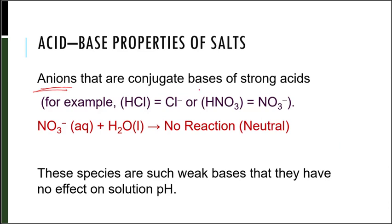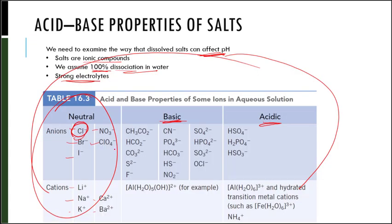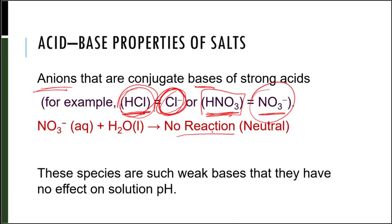Looking at anions that are conjugate bases of strong acids: we know a strong acid is hydrochloric acid, so the conjugate base of HCl is chloride. Nitric acid is a strong acid, so the conjugate base is NO3-. Notice that chloride and nitrate have no reaction in solution — they keep it neutral. These species are such weak bases, they will have no effect on the solution pH.